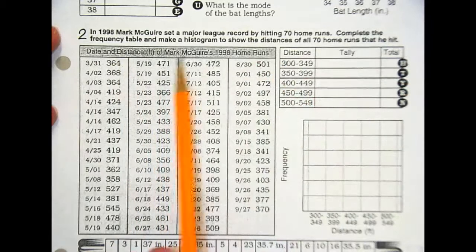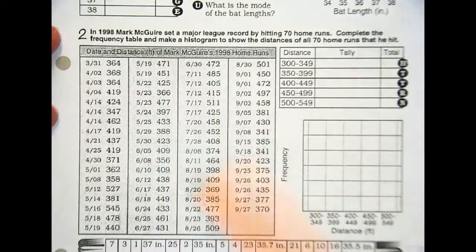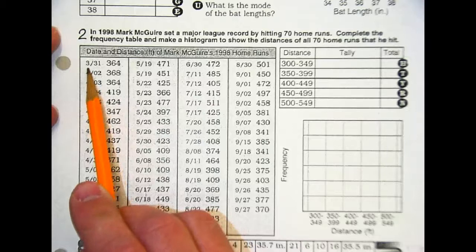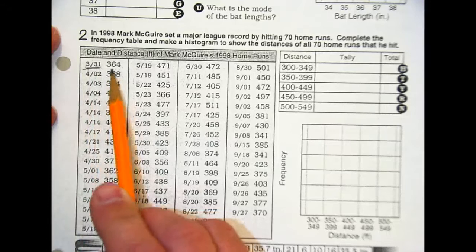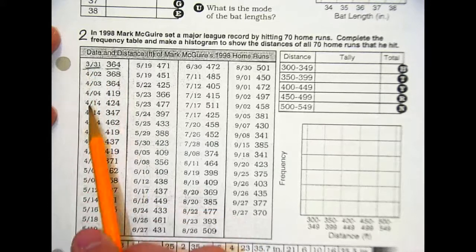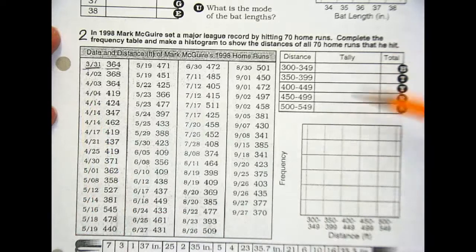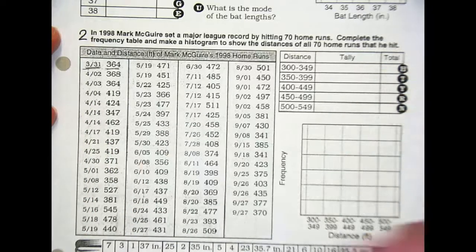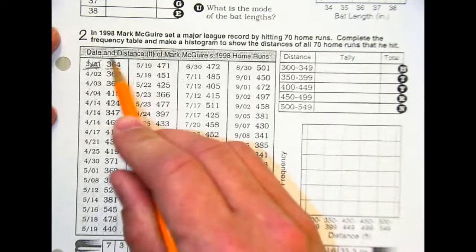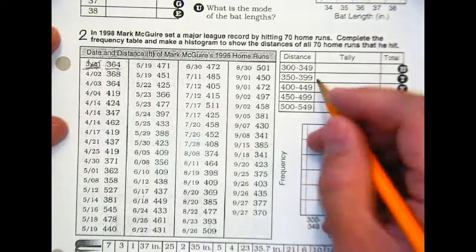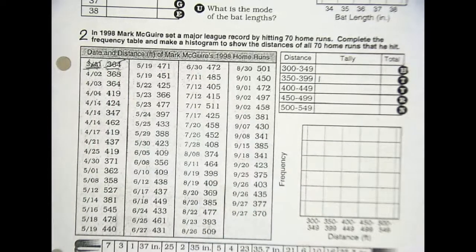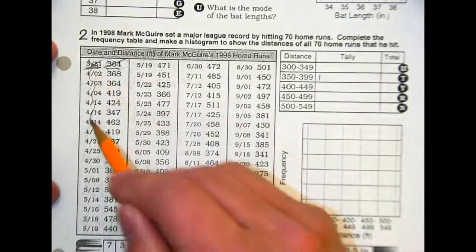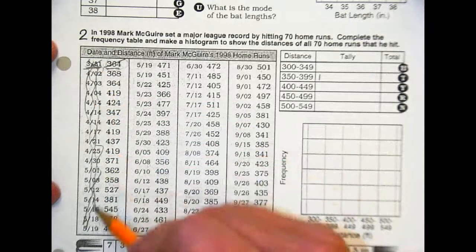Now when you're reading through this, if you read up here, it says date and distance of McGuire's 1998 home runs. So this stat right here says 3-31 is 364. This is your date. This is your distance. Do we care about the date? We're not making a frequency table of the date, we're only making the frequency table of the distance. So really we kind of ignore this part, and we use the distance over here. And so 364 would be tallied up right in there. If I were you, I'd maybe cross them out as you go. So can you just cross off the entire column for dates? Sure. If you don't want to see the dates, if that's going to confuse you, go for it.